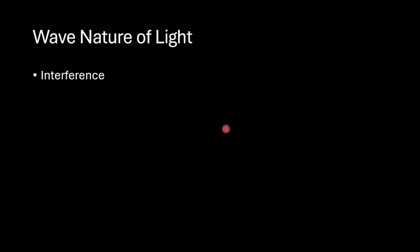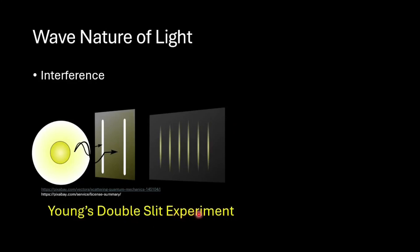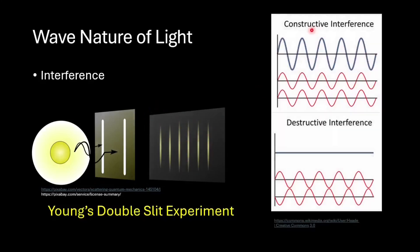The most famous experiment to demonstrate interference was Young's double slit experiment. In Young's double slit experiment, light was incident on a metal plate with two small slits. Several bright and dark bands were observed on the screen on the other side. The bright bands were due to constructive interference in which the crest of a wave overlaps with the crest of another wave.